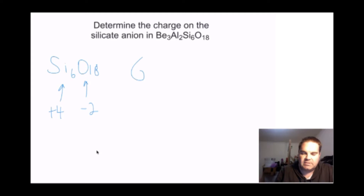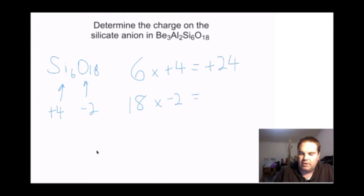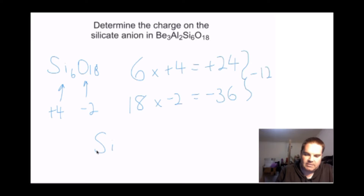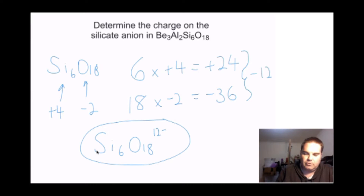If you've got 6 silicons with a plus 4 charge, overall that equals a charge of plus 24. If you've got 18 oxygens with a charge of minus 2, you end up with a charge of minus 36. The difference — 24 minus 36 — gives minus 12. So Si6O18 has a 12-minus charge.